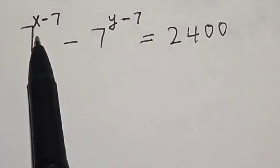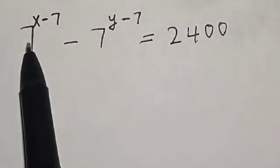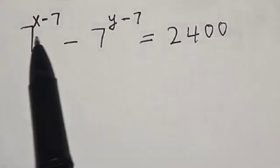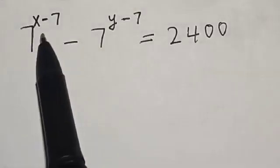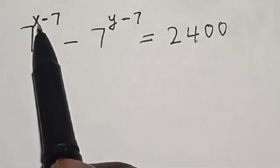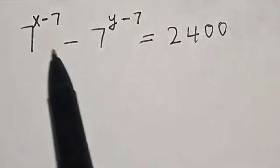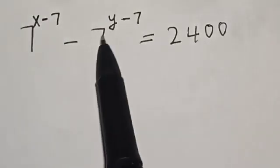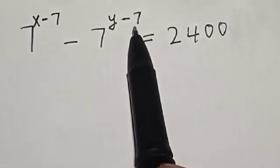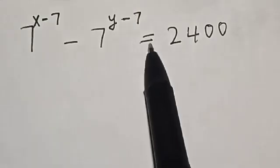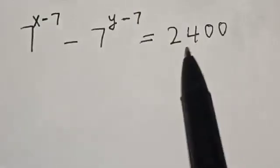Hello, welcome to Math G's. In this class, we want to find the value of s from this given equation: 7 raised to power x minus 7, minus 7 raised to power y minus 7, is equal to 2400.